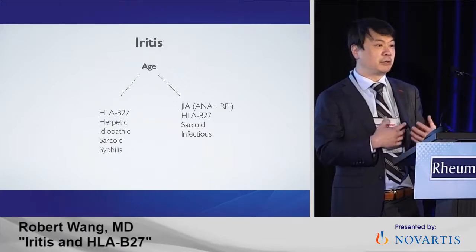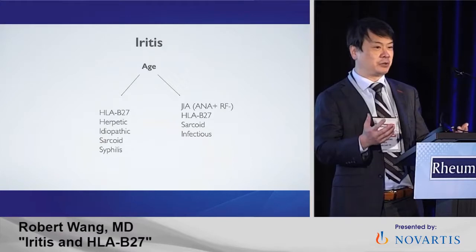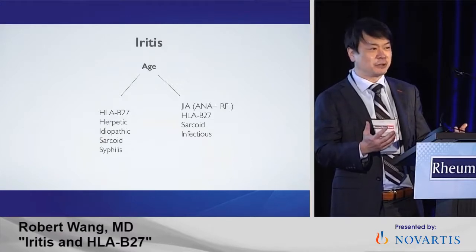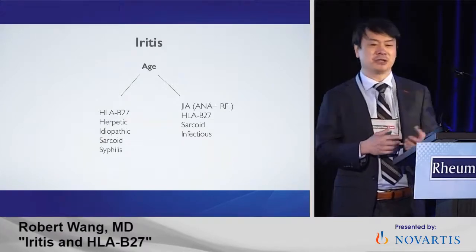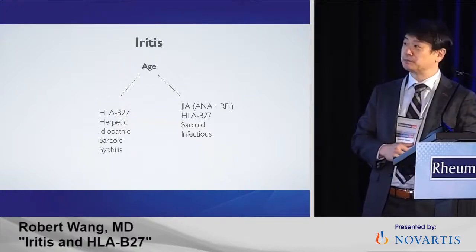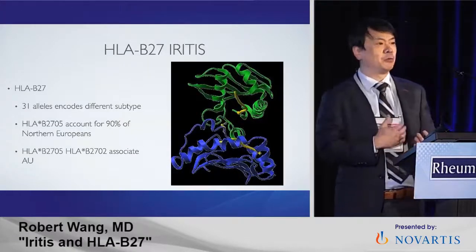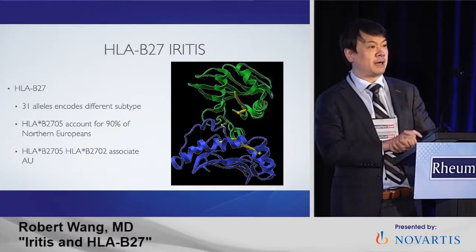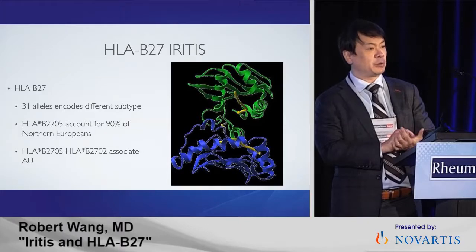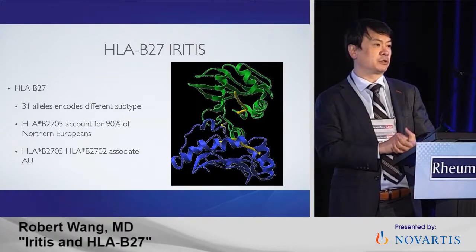I didn't throw in lupus — I don't get an ANA. It drives me nuts when I get a referral for someone who's ANA positive. So the list is pretty small. When you look at all causes of iritis — inflammation in the front of the eye — HLA-B27 comprises 50% of those causes.